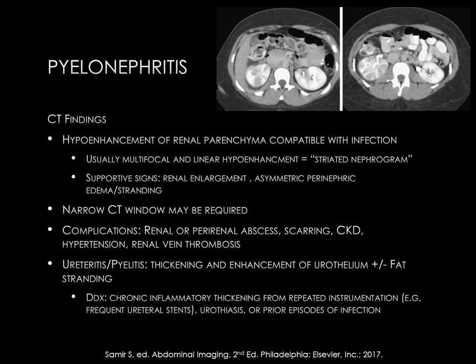In the upper portion of the slide, you see two axial CT images through the kidneys. You'll notice the right kidney is enlarged as compared to the left, and also demonstrating hypoenhancement. There are linear areas of hypoenhancement within the kidney — this is the so-called striated nephrogram in acute pyelonephritis of the right kidney.